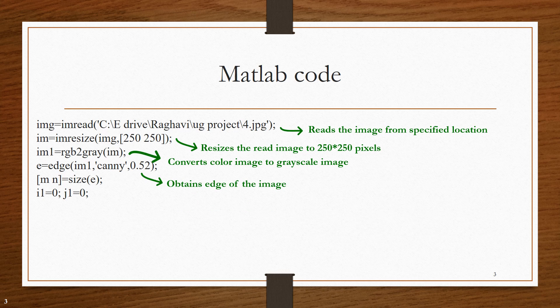Then, edge command is used to obtain edge of this grayscale image. It is obtained using canny filter with a variance of 0.52. This variance can vary from 0 to 1. To obtain sharp edges, this variance is set to 1.